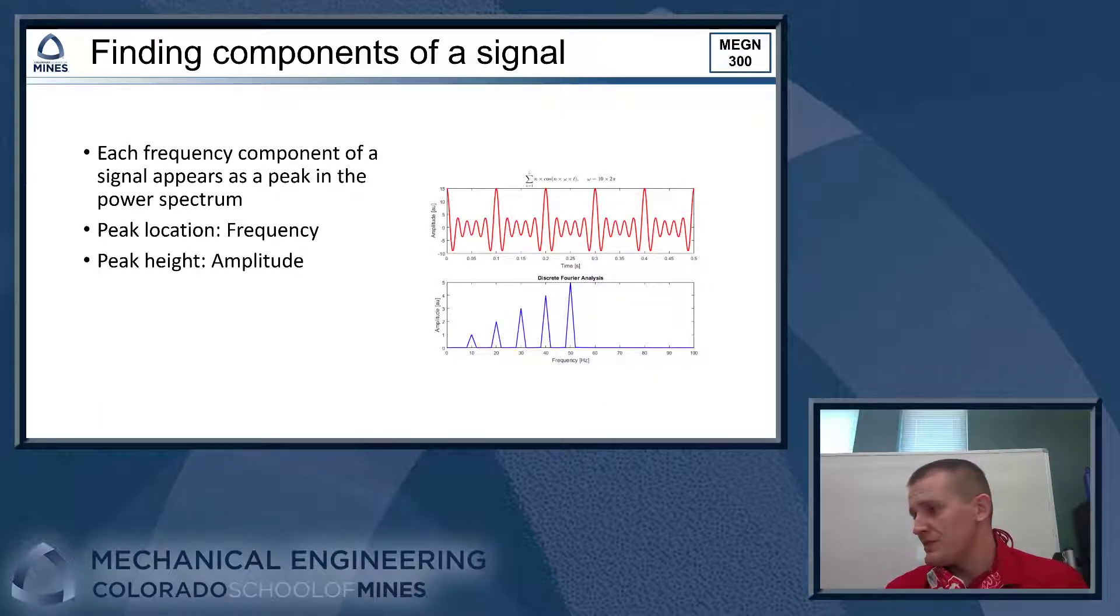So when we conduct the Fourier transform, every frequency component is going to appear as a peak in the resulting power spectrum. So the peak location tells us the frequency of that signal component and the peak height tells us the amplitude of that frequency component. There's a simple example here where we've taken five sine waves and added them together to get a more complex resulting waveform.